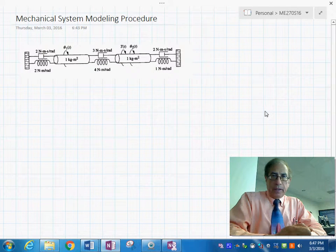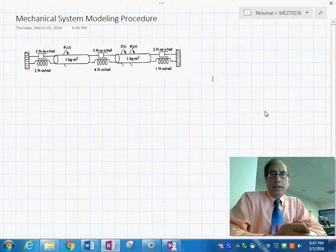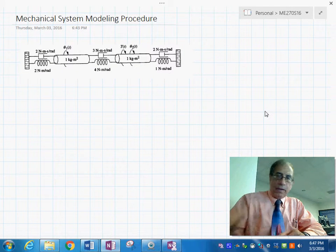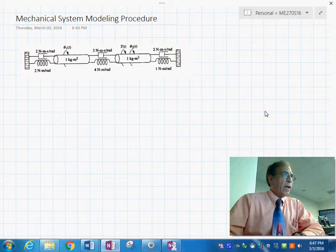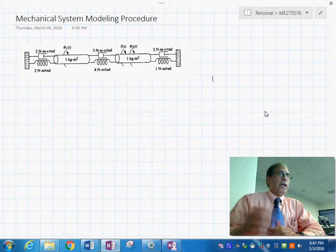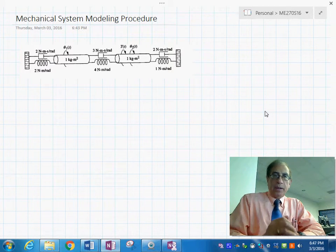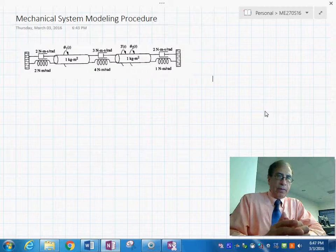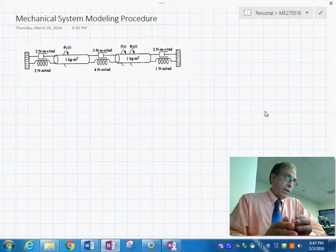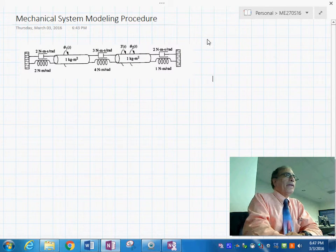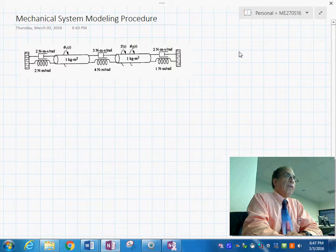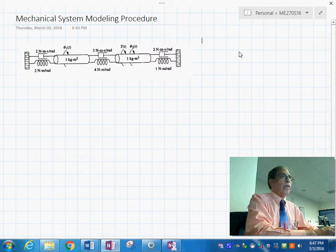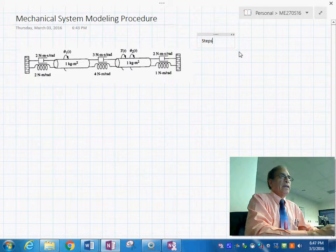Today we are going to see how to build a bond graph model of this mechanical system that you see on the screen. The question here is, is there a specific procedure that we can apply in such a way that we generate the bond graph modeling in an easy way and we don't make mistakes? So that's the idea here.